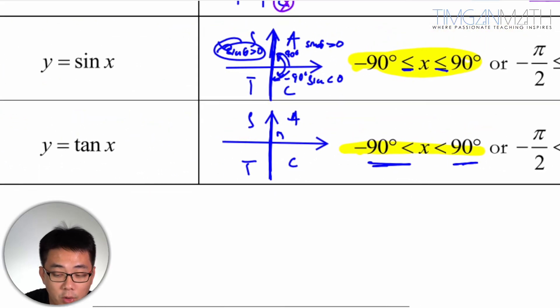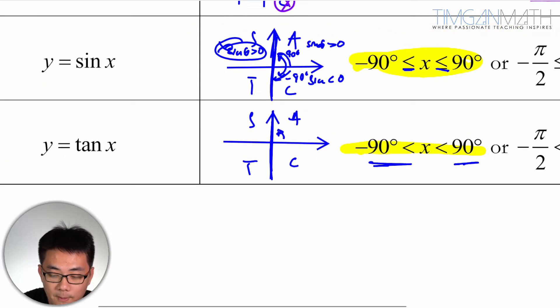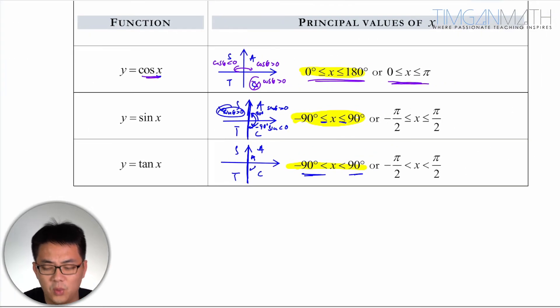When we're drawing the graph, you will understand why. So that's the reason why we pick this range here to be the principal values of the corresponding trig ratio.